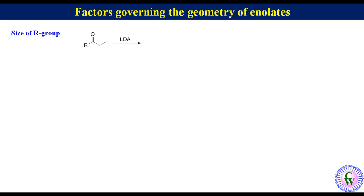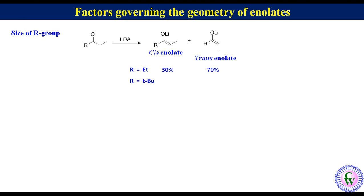Factors governing the geometry of enolates: The geometry of lithium enolates is governed by the size of the R group which is not enolized. For example, if we treat this ketone with LDA it will give a mixture of cis and trans enolate. The percentage of cis and trans enolates varies with the size of R — bigger the R, higher will be the percentage of cis enolate. If R is equal to ethyl, cis and trans enolates are 30 and 70 percent respectively; but if R is equal to t-butyl, cis enolate is 98 percent while trans is only 2 percent.